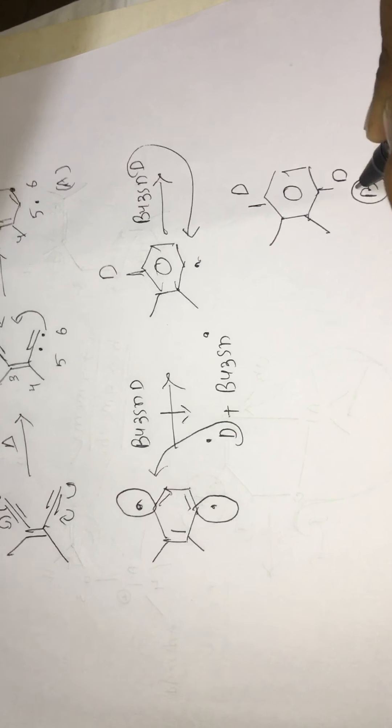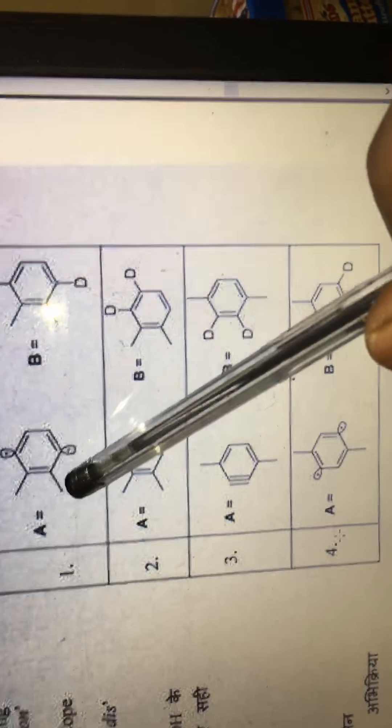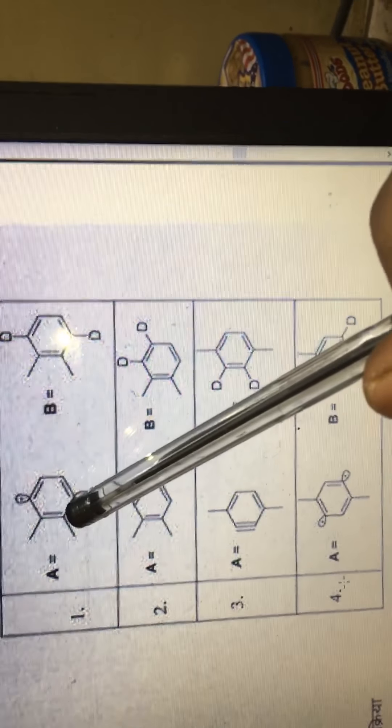So this is the option number B. And if you see in the question paper here, in the option number A we have the free radical which we got in the mechanism.